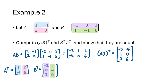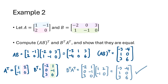Next we compute BᵀAᵀ. We form Aᵀ and Bᵀ separately, taking the rows of each matrix and turning those into columns. Notice that AᵀBᵀ is not defined here, confirming that (AB)ᵀ can't always equal AᵀBᵀ. When we multiply BᵀAᵀ, we get the same matrix we got when computing (AB)ᵀ, which illustrates that the property works as stated.